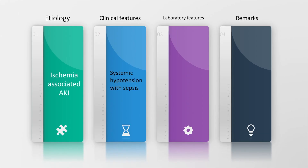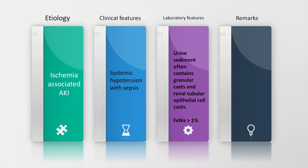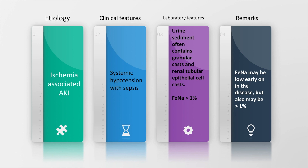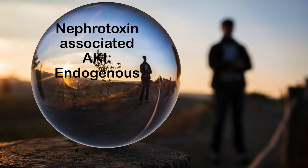Fractional excretion of sodium may be low early on in sepsis-associated AKI but may also be more than 1%. In ischemia-associated acute kidney injury, systemic hypotension with sepsis is the dominant clinical feature, and labs may show urine sediment containing granular casts and renal tubular epithelial cell casts. Fractional excretion of sodium is generally more than 1%.